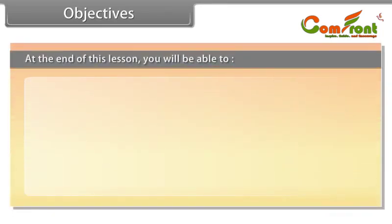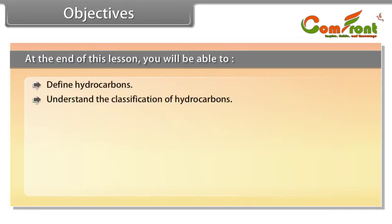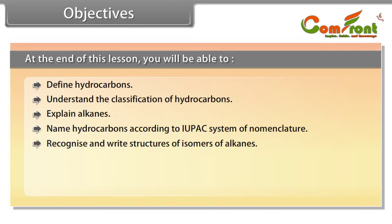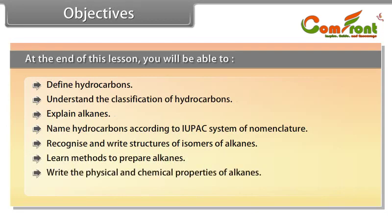Objectives: At the end of this lesson, you will be able to define hydrocarbons, understand the classification of hydrocarbons, explain alkanes, name hydrocarbons according to the IUPAC system of nomenclature, recognize and write the structure of isomers of alkanes, learn methods to prepare alkanes, write the physical and chemical properties of alkanes, and explain the conformations of ethane.